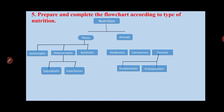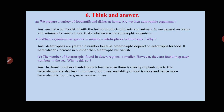The fifth question asks to prepare and complete the flowchart according to the type of nutrition. Nutrition in plants includes autotrophic, heterotrophic, and symbiotic. Heterotrophic plants are saprophytic or insectivorous. Animals have three types: herbivorous, carnivorous, and parasitic. Parasitic animals are further divided into ectoparasitic — living on the outer surface — and endoparasitic — living inside the body.